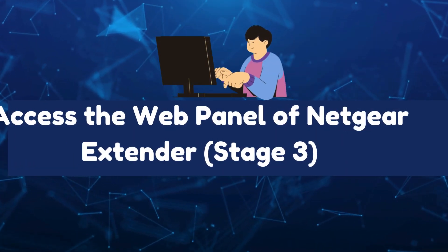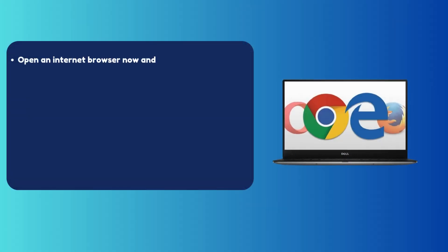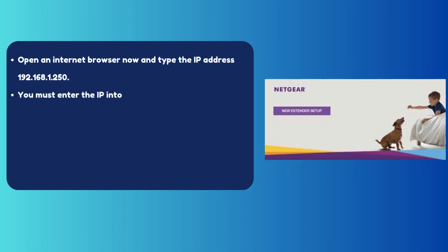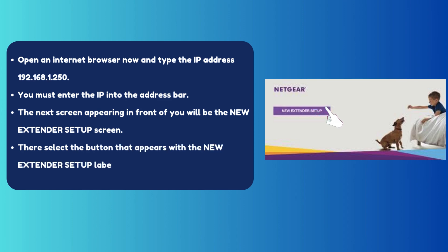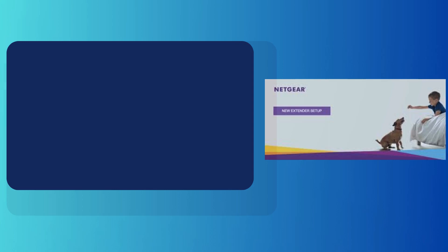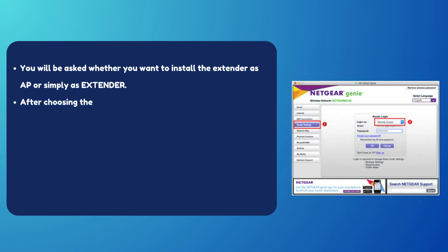Stage 3: Access the web panel of the Netgear extender. Open an internet browser and type the IP address 192.168.1.50 into the address bar. The next screen will be the new extender setup screen — select the button labeled "New Extender Setup." You will be asked whether you want to install the extender as an AP or simply as an extender. After choosing the desired option, select if you need Netgear Genie's help.